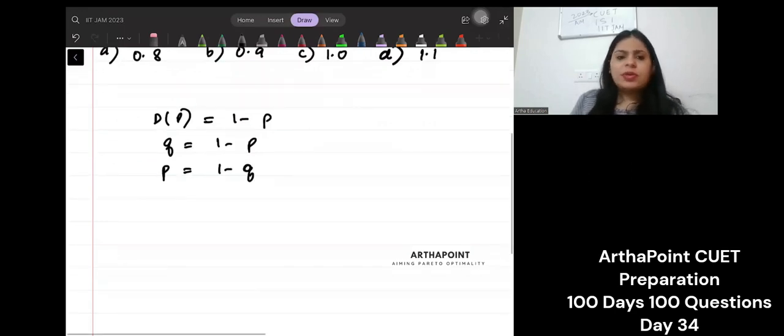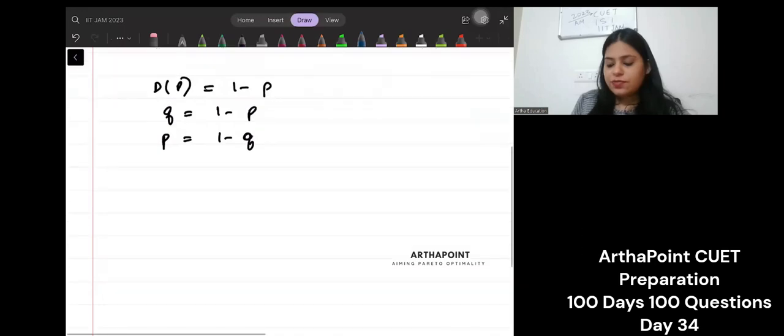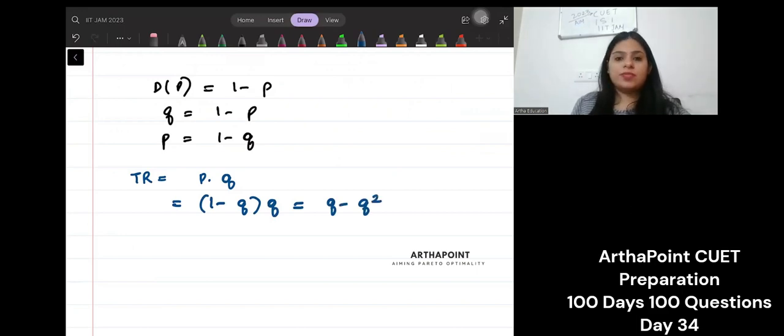Can you tell me what will be total revenue of the firm? So total revenue is given by price into quantity. So 1 minus q into q. So q minus q squared. Right.